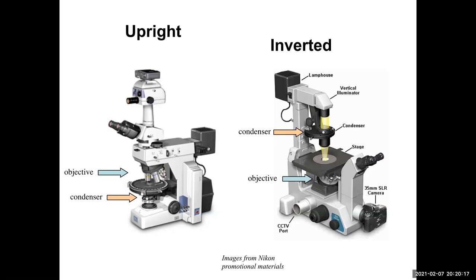The scope on the right is inverted because upright was the first design and then people invented the inverted scope. It's actually the same light path, just flipped gravity-wise: the light is at the top, goes through a condenser, through your specimen, through the objectives, and out to the oculars or camera. It's the same exact thing — just flipped over.